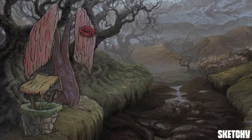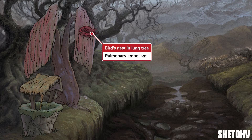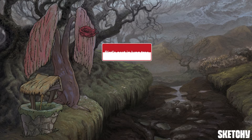If a patient presents after returning from an international vacation with pleuritic chest pain, dyspnea, and asymmetric leg swelling, pulmonary embolism should be on the top of your differential. Just like blood clots are basically tangled heaps of platelets and fibrin, we've represented them with a bird's nest in a lung-shaped tree. Aside from chest pain and dyspnea, patients will often present with tachycardia and, in massive PEs, hypoxia and hemodynamic collapse.